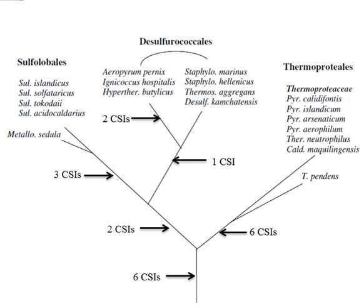By determining the presence or absence of CSIs in an out-group species, one can infer whether the ancestral form of the CSI was an insert or deletion, and this can be used to develop a rooted phylogenetic relationship among organisms. Most CSIs that have been identified have been found to exhibit high predictive value and they generally retain the specificity for the originally identified clades of species.